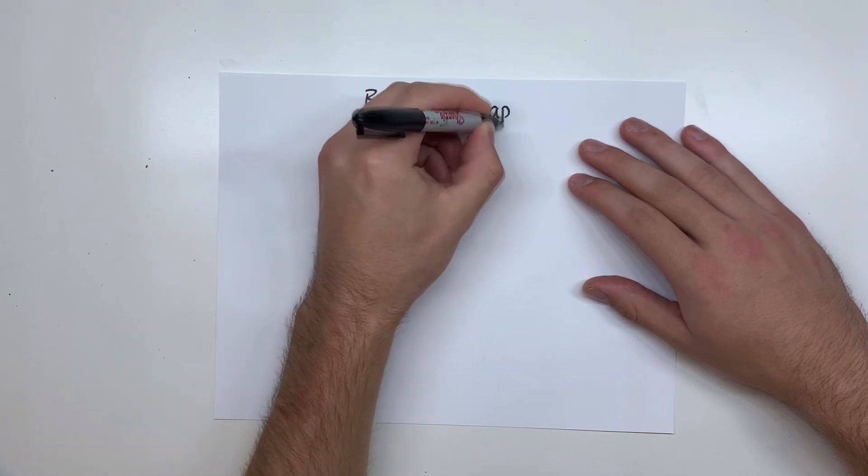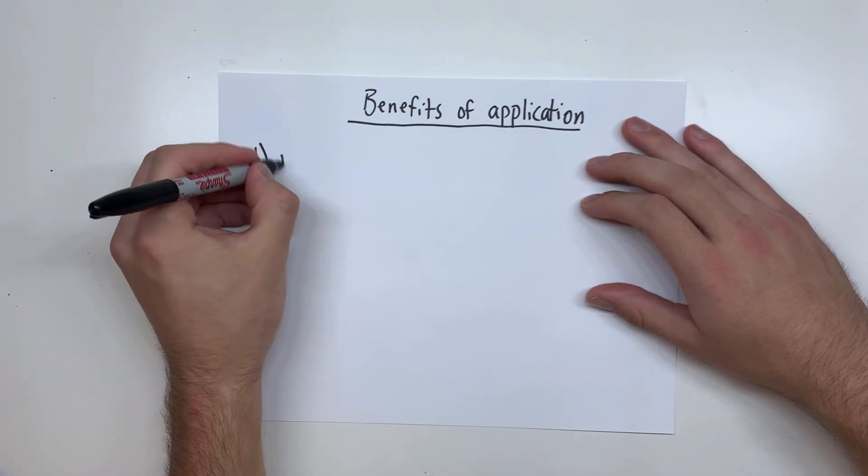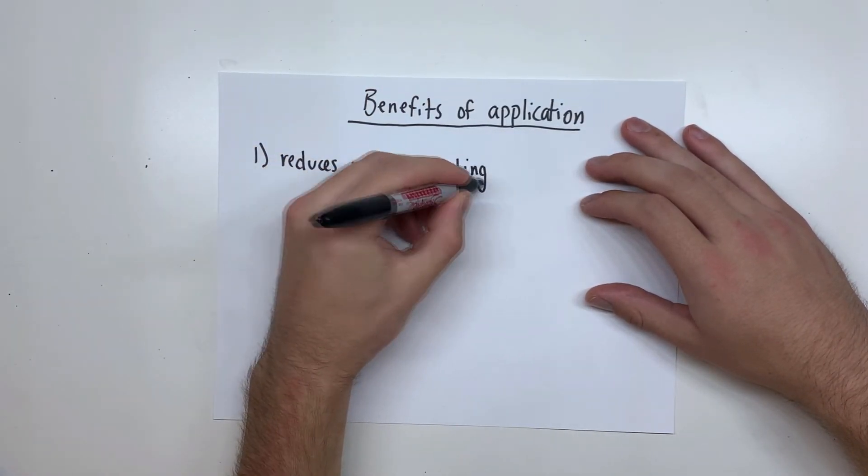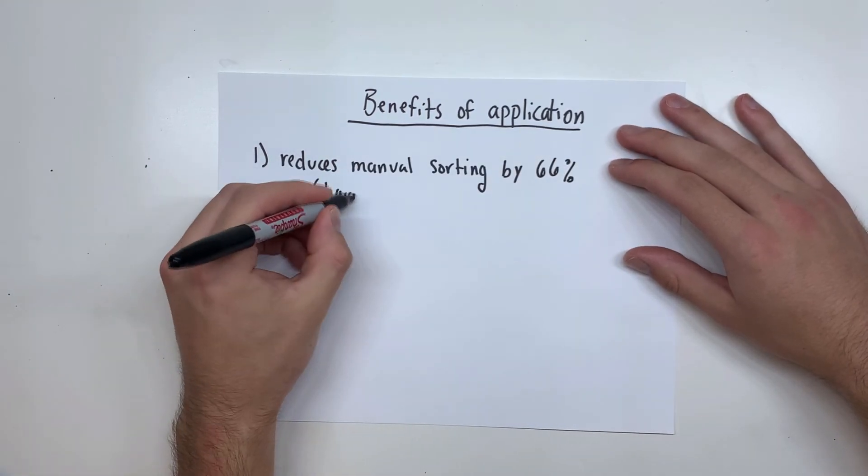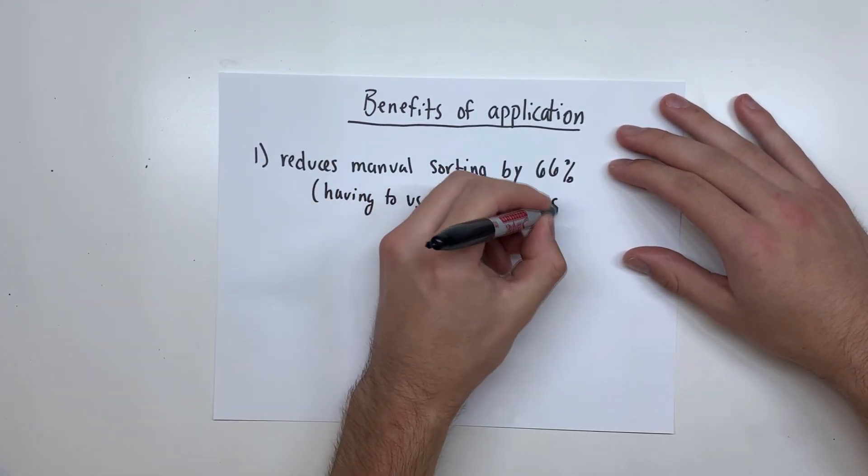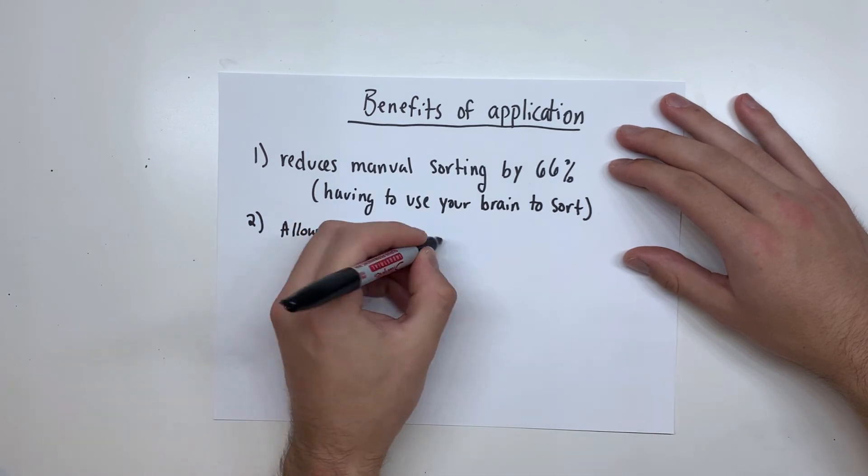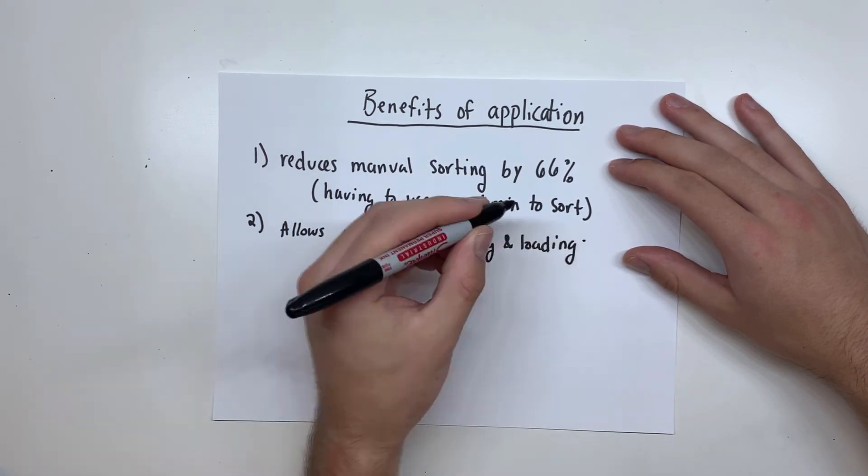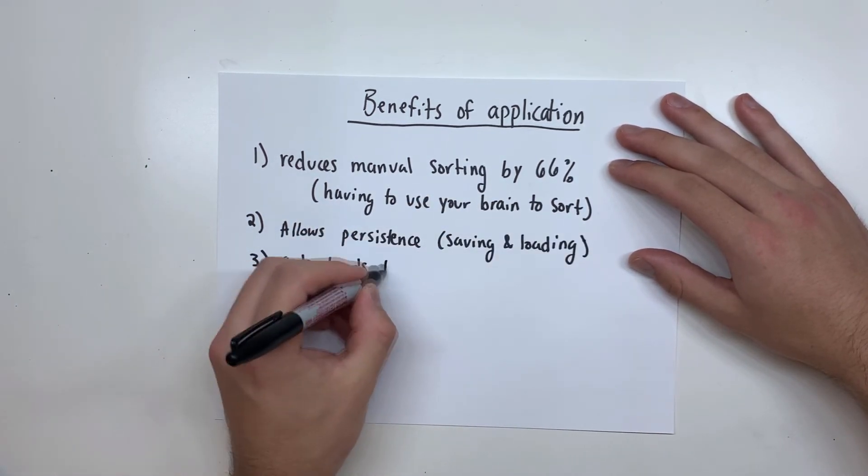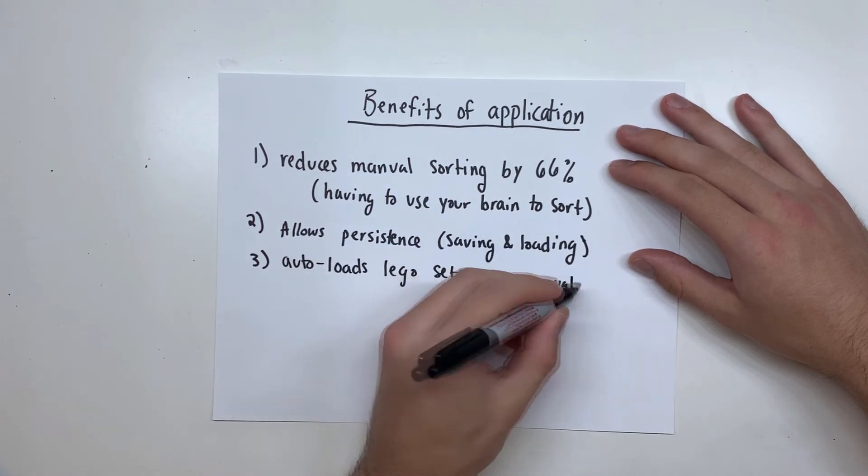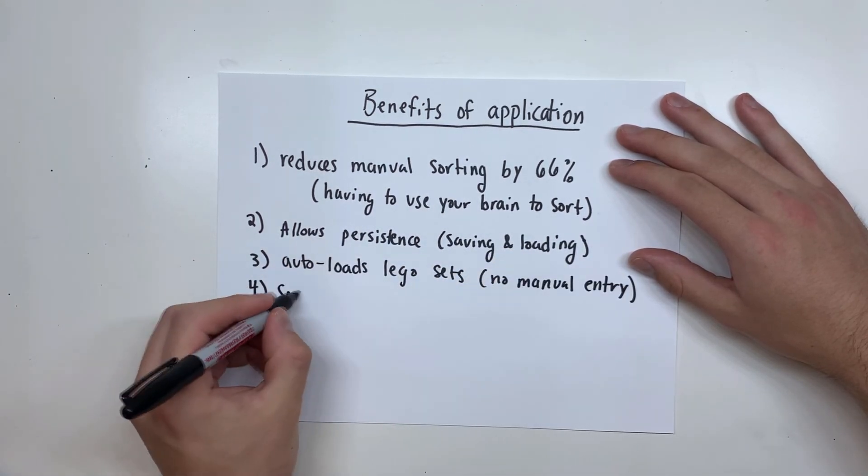Here's a summary of all of the efficiencies that this program provides. Reduces piece sorting by 66% as it auto-sorts the pieces by set and color. Allows persistent saving and loading. Automatically loads Lego sets using web scraping.